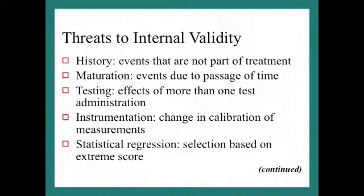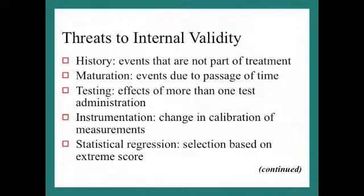Another threat is statistical regression — regression towards the mean. If you keep doing the test over and over, people will start moving back towards the mean. We know from the bell-shaped curve that most people are near the mean. If we select individuals on the extremes — extremely low or extremely high scores — they'll probably move back towards the middle over time.